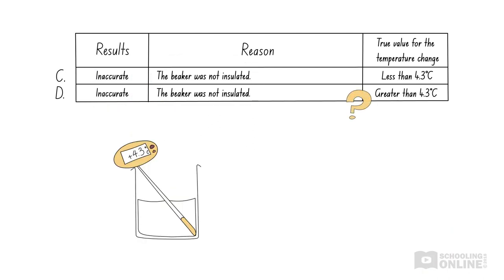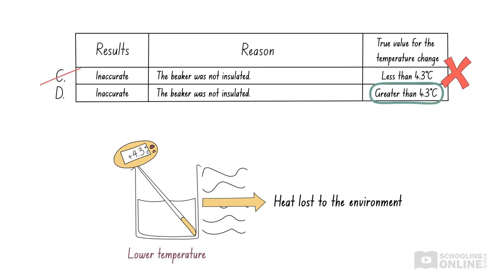Now, would the true value for the temperature change be greater or less than 4.3 degrees Celsius? The reaction produced heat, but some of the heat was lost to the environment. Thus, we would have measured a slightly lower temperature and the true value of the temperature change should be greater than what we measured. Therefore, the correct answer is D.